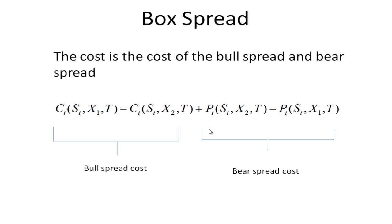The bear spread is the price of the put option with exercise price X2 that you purchase minus the put option with exercise price X1 that you write.